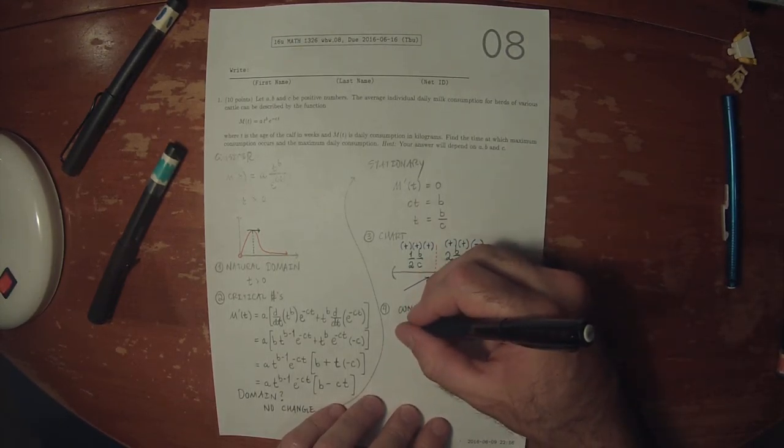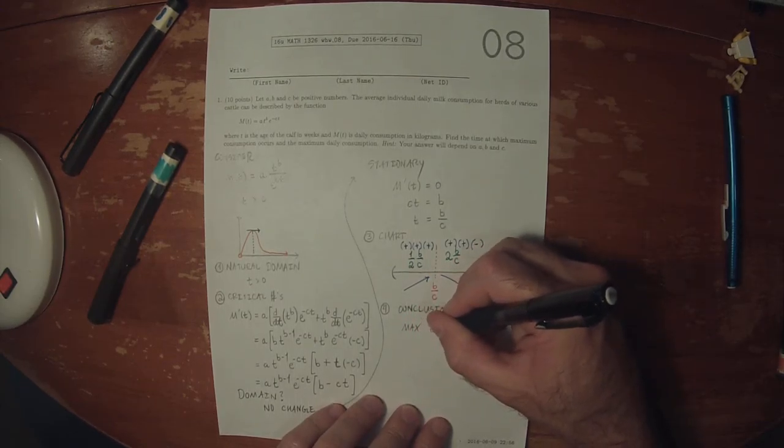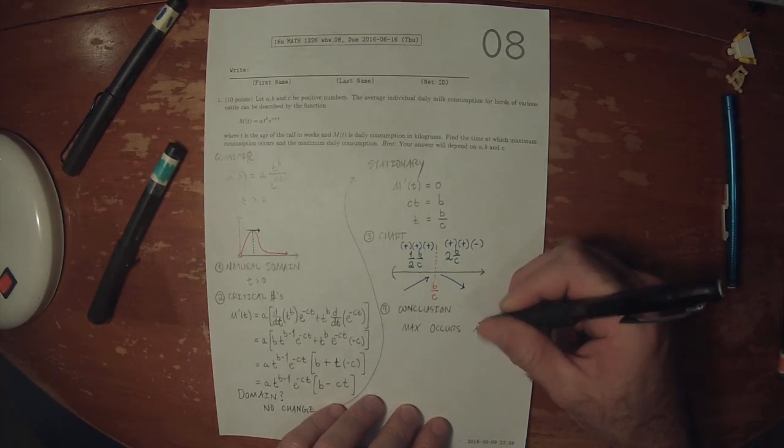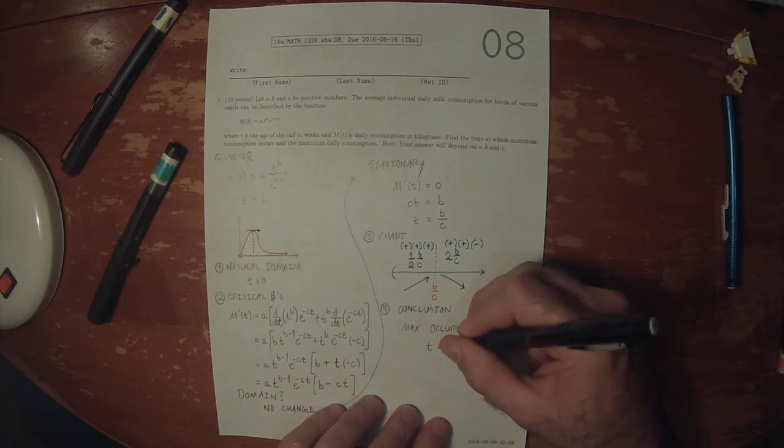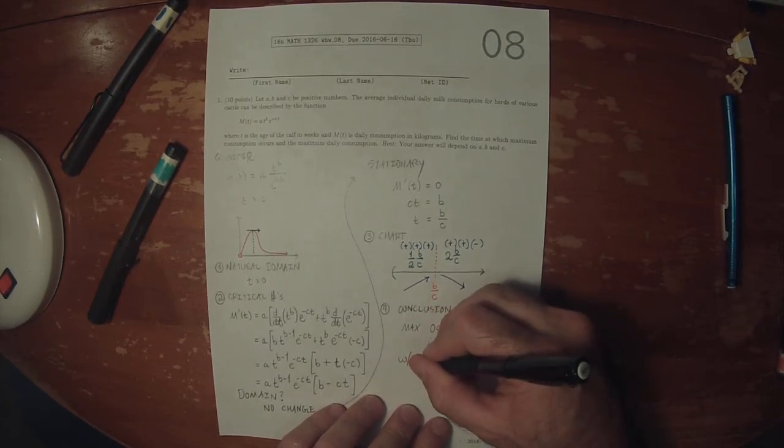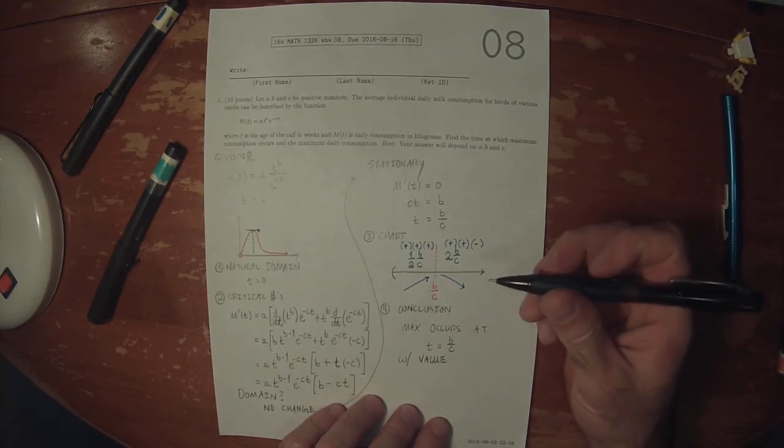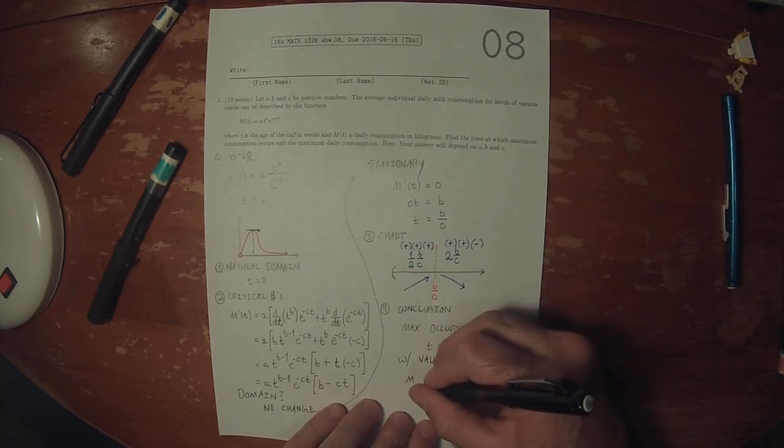The conclusion is the maximum occurs at T is B over C with value, whatever we get when we plug that in.